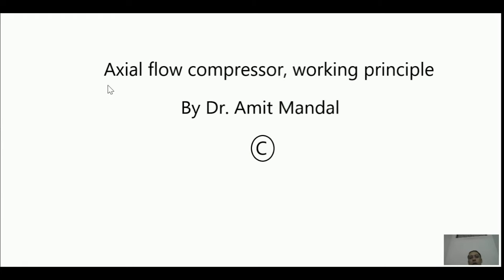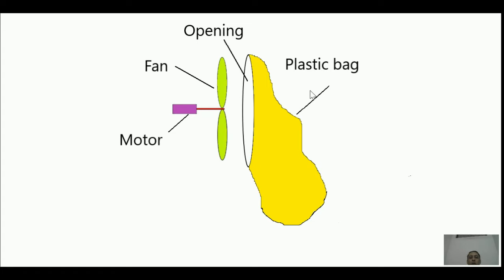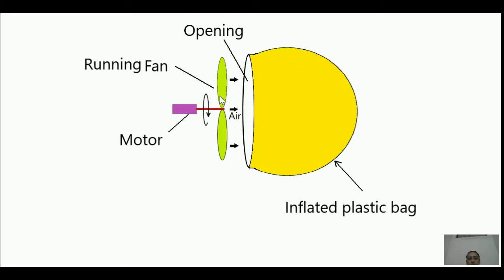Hello students, today we will learn how an axial flow compressor works. We will understand the working principle through a daily life example so you can easily grasp the physical concept. Here we have a fan and a plastic bag — this is the opening of the plastic bag. When the motor starts spinning the fan, air will start flowing inside the plastic bag through the opening, and it will be inflated.